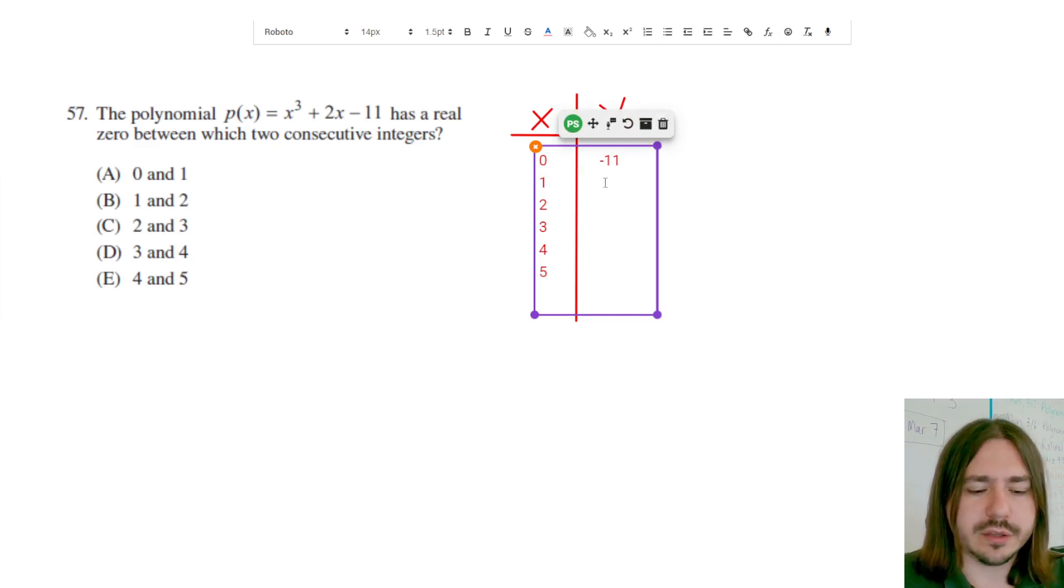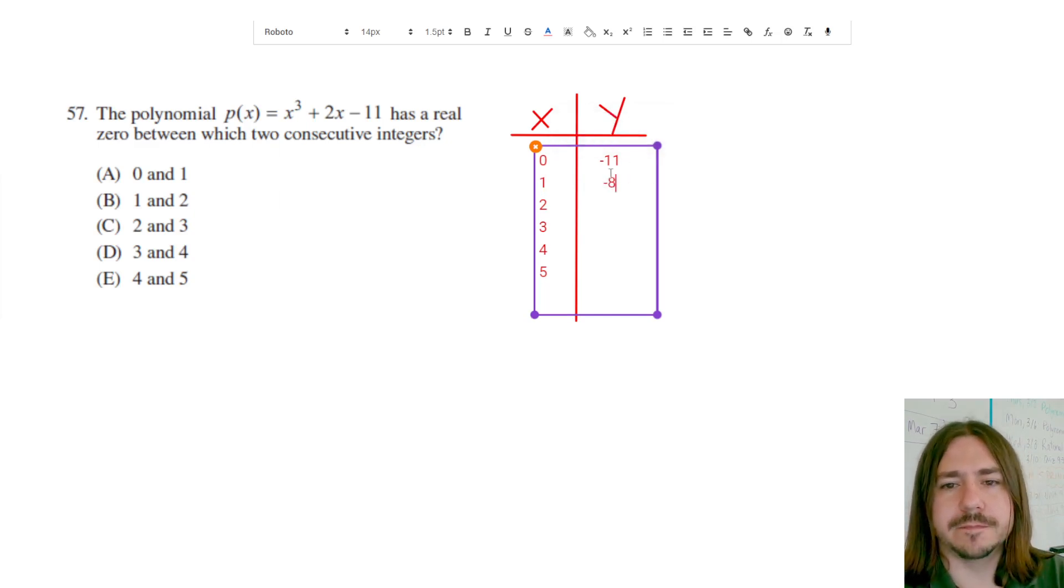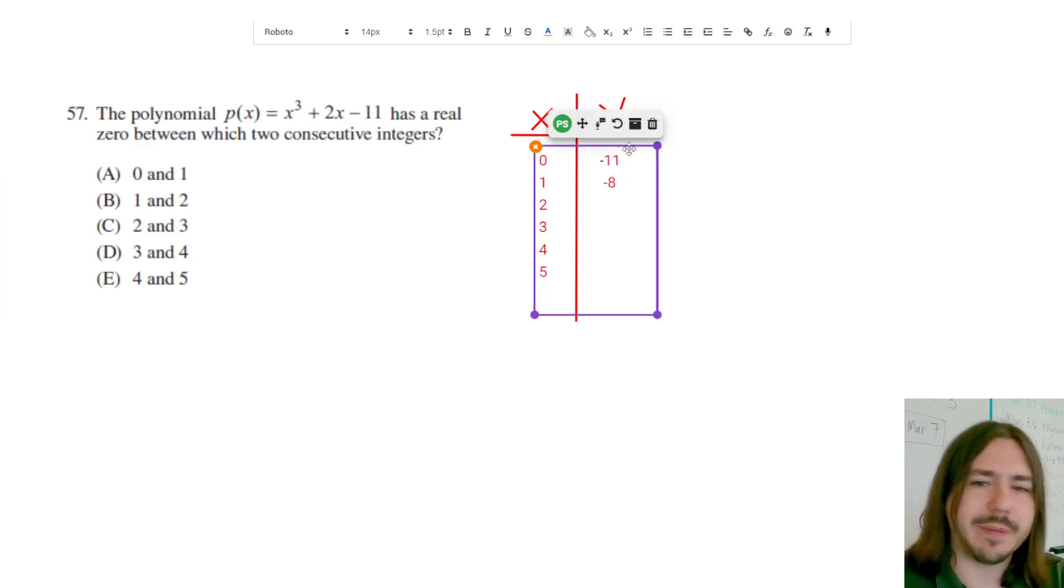If I type in 1, 1 cubed would be 1 plus 2 times 1 minus 11, I get negative 8. So while it's possible that there's a zero there, like if it crossed over and then came back down, that's possible that there's one in here, but we can't say for sure. We don't see the sign change here, so we can't say with certainty whether or not there's a zero there.